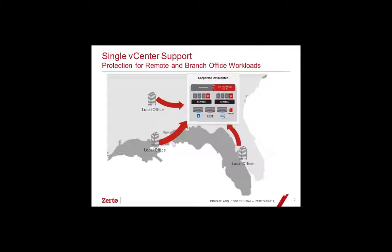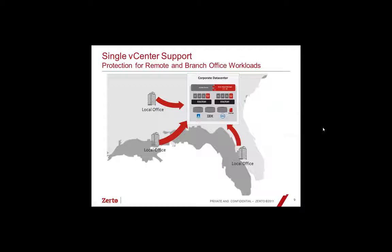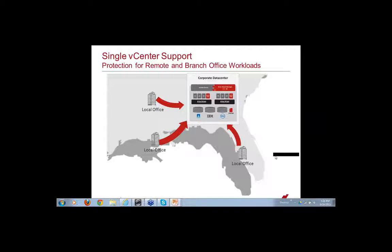Shannon, do you want to talk about one of our new features? Sure. We have customers who are either cloud service providers or enterprises that manage remote locations with a single vCenter. In the 3.0 release we announced before VMworld, we support single vCenter — we call that ROBO, remote branch office workload. You can fail over between resource pools, clusters, and so on from that centralized data center. Obviously if the single vCenter fails, your environment is in jeopardy, but for environments that need this type of deployment, we support that.